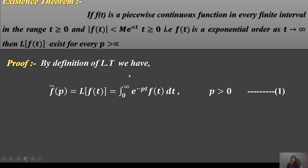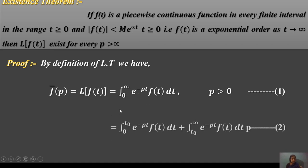By the definition of the Laplace transformation, we have F(p) = L{f(t)} = integration from 0 to infinity of e^(−pt) f(t) dt, where p > 0.